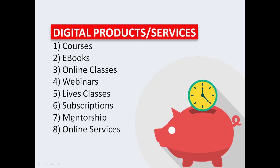Number seven is mentorship. You might have a skill or a money-making skill that you know so well and you want to mentor people on it. You have a laid-down pathway or blueprint that you used to get to where you are or to make the money you've made, and you want people to benefit from that. You can organize a mentorship service, put people in a mentorship group, they pay for it, and you actually train them and put them through the whole process.